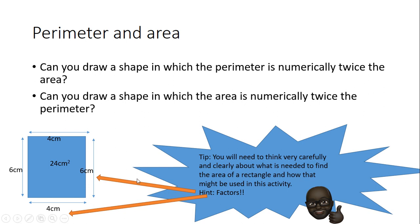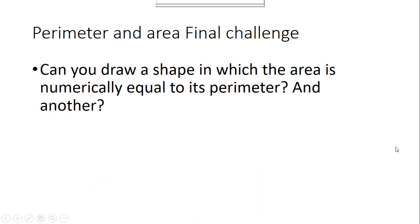Finally, this is the super challenge, uber challenge even. Can you draw a shape, or even two shapes, in which the area is numerically equal to its perimeter? Another—so two shapes where the area and the perimeter are exactly the same.